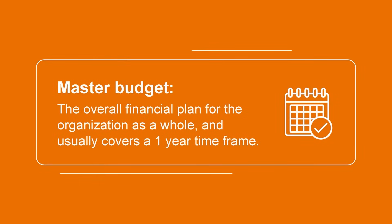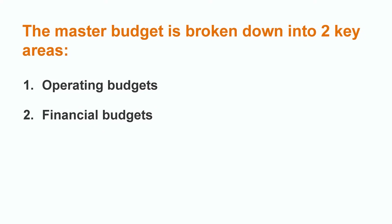Companies typically create what's called a master budget, which is the overall financial plan for the organization as a whole and usually covers a one-year time frame. The master budget can be broken down further into two key areas: operating budgets and financial budgets. In this video we're going to focus on the financial budgets, which detail the expected cash flows of the organization that would ultimately impact the balance sheet.